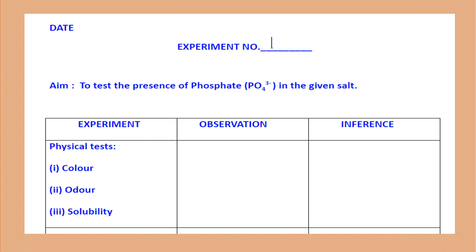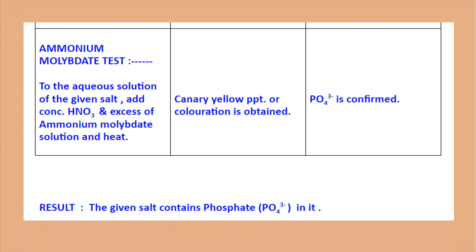Next is experiment number 11. The aim is to test the presence of phosphate in the given salt. Physical tests will be written in the same manner as for other ions. It has only one test, called the ammonium molybdate test. The aqueous solution of the salt — add concentrated nitric acid, then excess ammonium molybdate solution, and heat the test tube carefully with all these contents. You will obtain a canary yellow precipitation or coloration, which confirms that there is phosphate in the given salt.